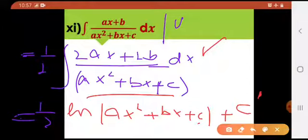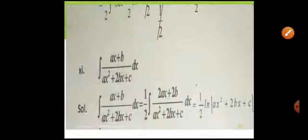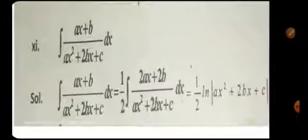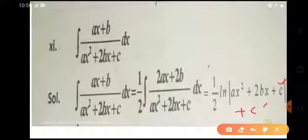I hope this is clear. Yeh c dash kar rahi hain, because yahaan pe aapke paas c use hua hua hai — taakay same use na ho — aap isko c dash kar lein, constant of integration. This is your answer. They have missed the constant of integration in the solution — aapne zaroor likhna hai. C dash mein se likh — because we already have c in the question, so you'll be using it as c dash.